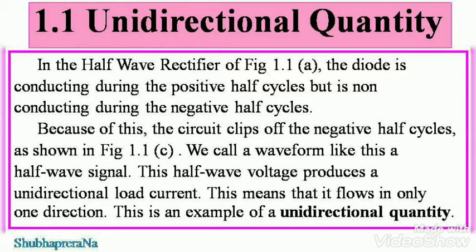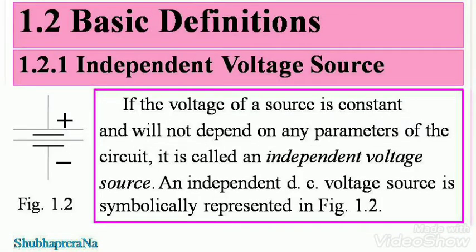This is an example of a unidirectional quantity. We took a half-wave rectifier and because the current flows in only one direction, it's called a unidirectional quantity. Let's brush up on a few basic definitions of electrical circuits. You would have learned this in your previous classes, but you'll need them more in the classes to come, so we'll have a quick glance at them.